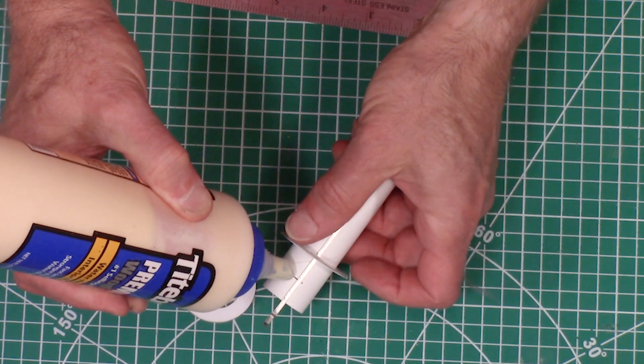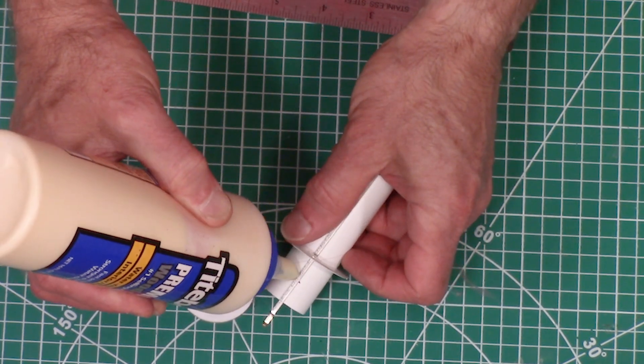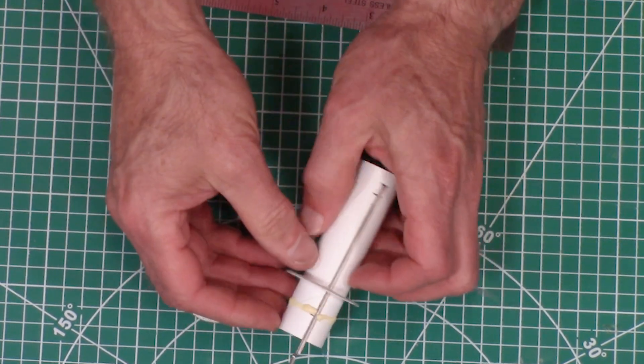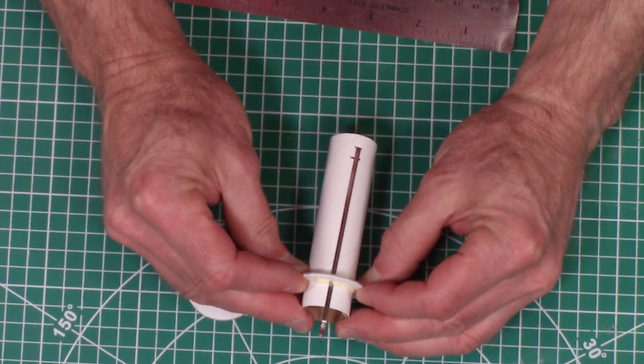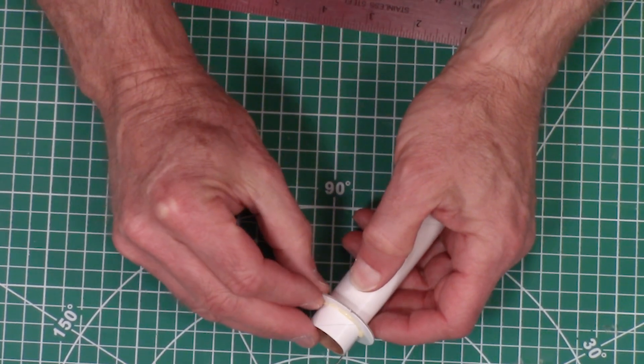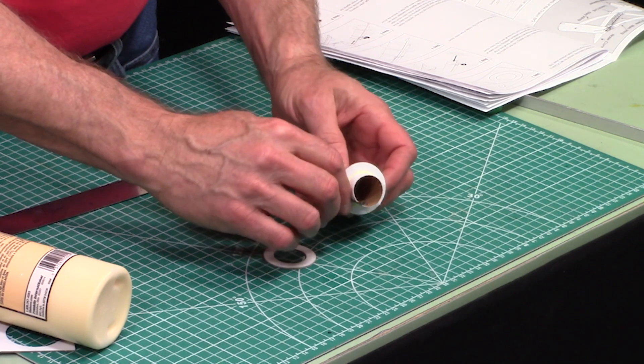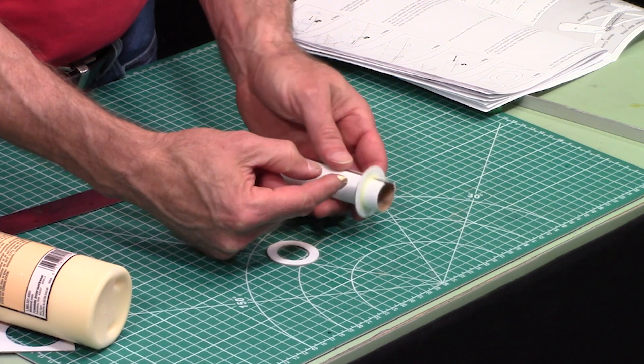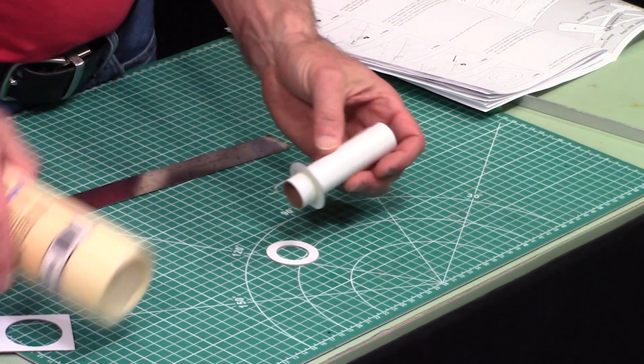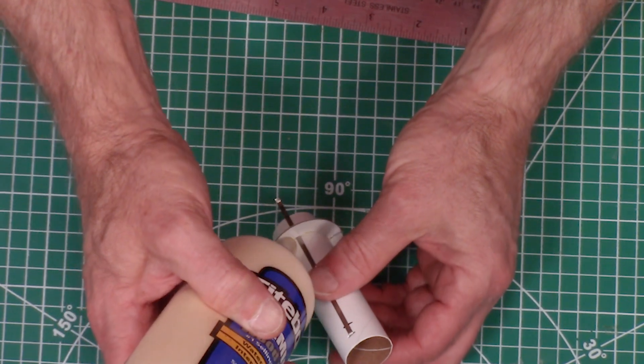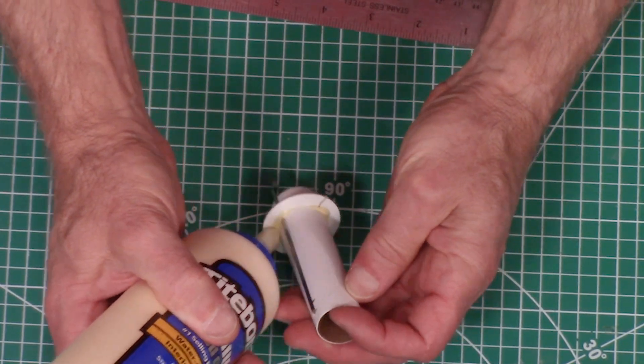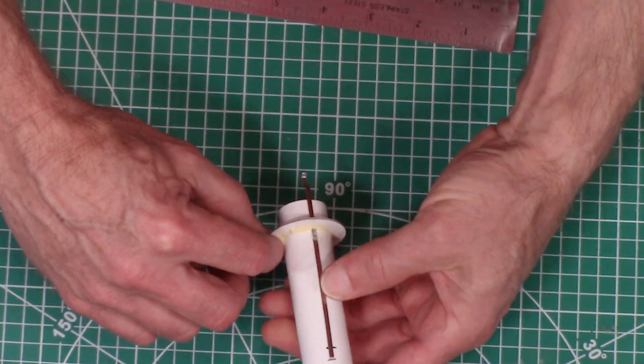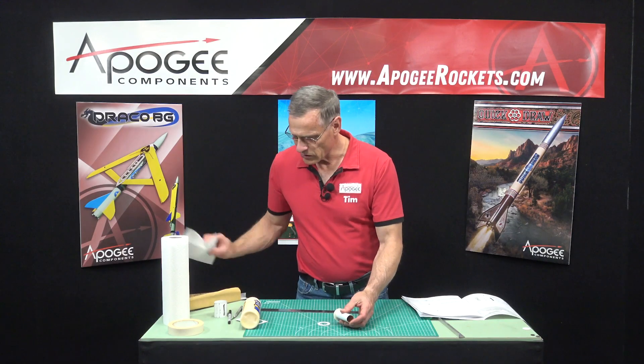I just run a bead of glue around, have some paper towels handy because I'm always making a mess. Then slide the ring up into it. Make sure it's nice and flush, it just makes a better looking rocket. I'm squeegeeing out any excess glue and I'll put another fillet of glue over here. I want this nice and strong.